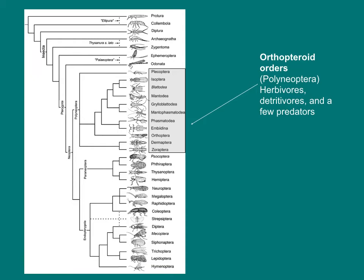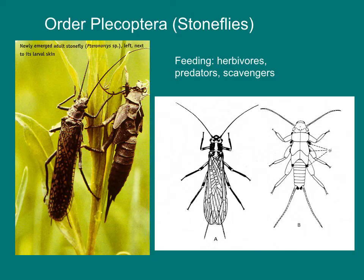One distinctive group of orders is called the Orthopteroid orders — the orders closely related to grasshoppers, crickets, and katydids. These insects are largely herbivorous and detritivores, and they also have predators. Stoneflies, the order Plecoptera, have aquatic juvenile stages. You find stoneflies along the edges of rivers, ponds, and lakes. Adults have a very short lifespan.